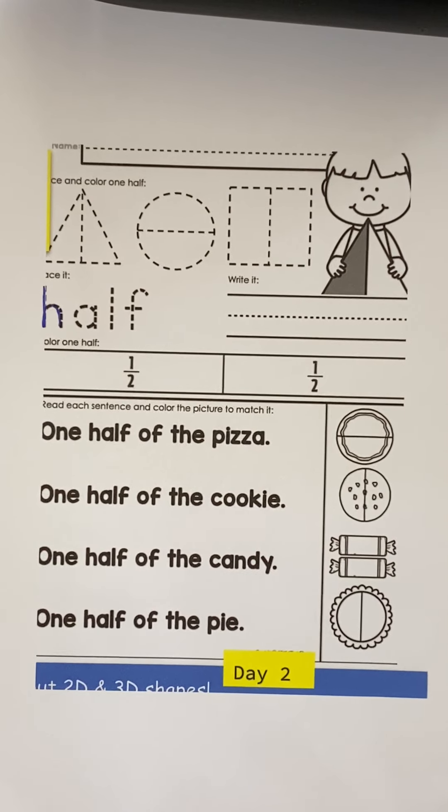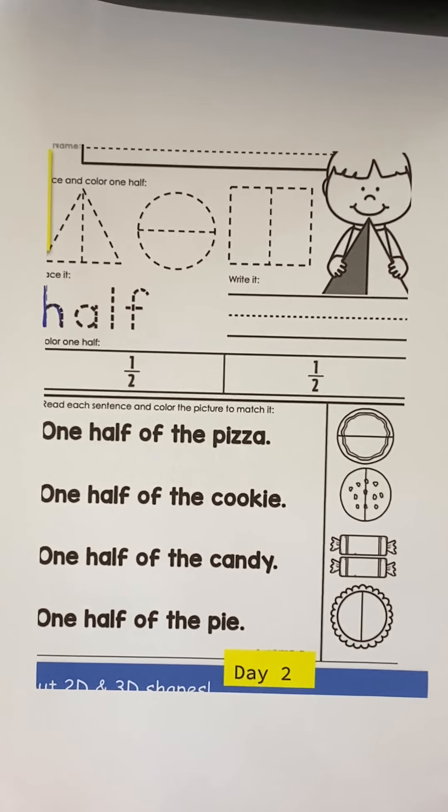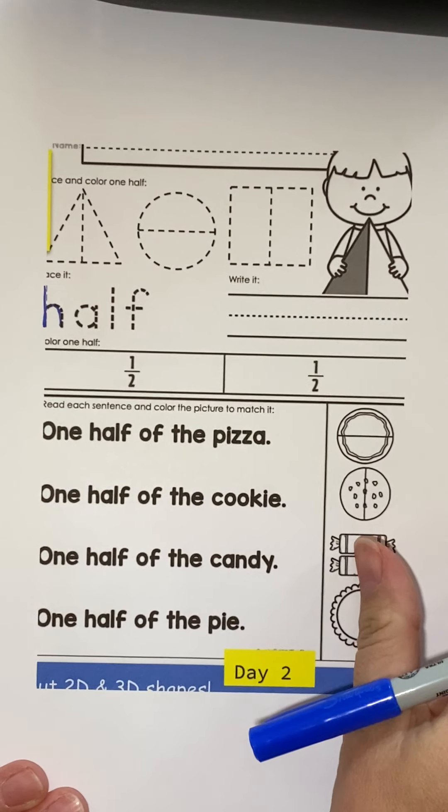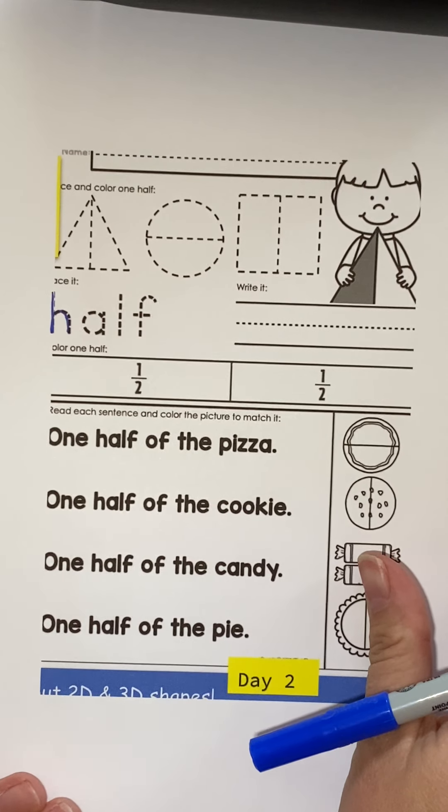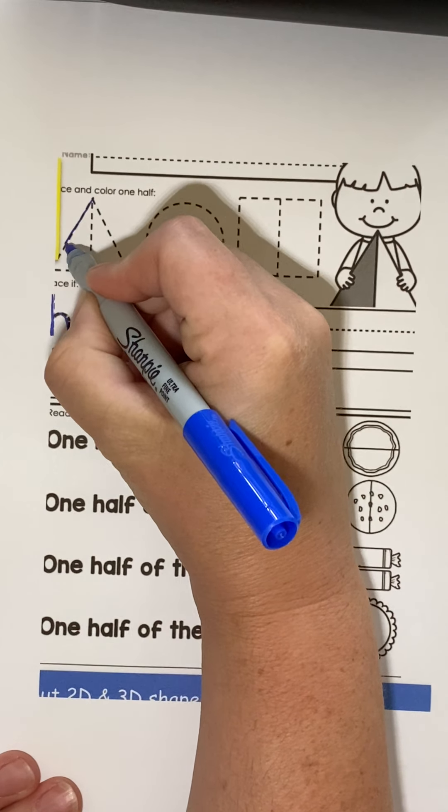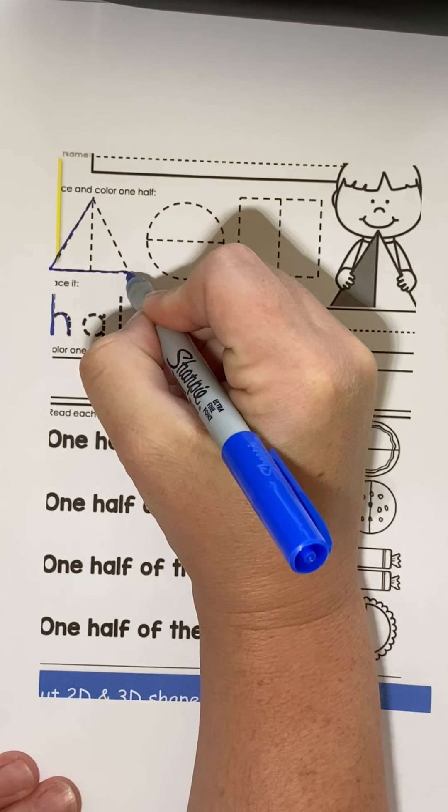Day two. Today we are talking about one half. We're going to trace the triangle. Now if you don't have a printer and you cannot print these out at home, that is okay. You can trace it with your finger on the computer.